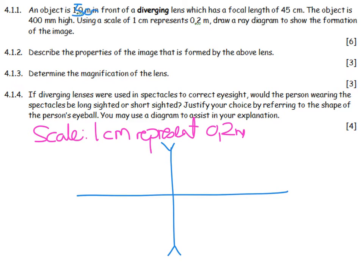So 1 meter is 5 centimeters, 45 centimeters is 0.045 meters, which means it is 2.25 centimeters, and 400 millimeters turns out to be 2 centimeters.